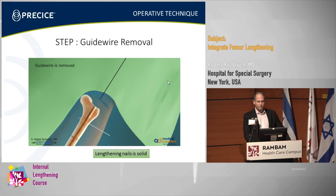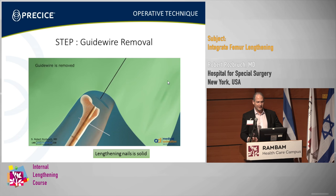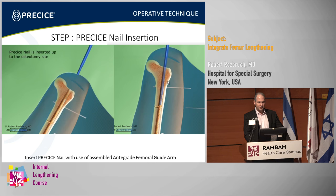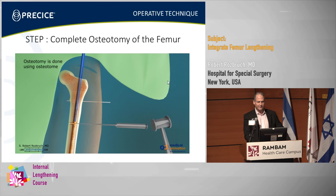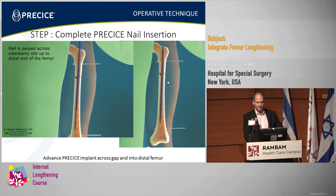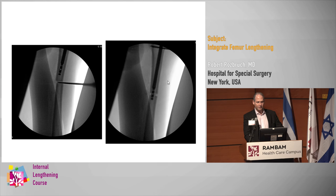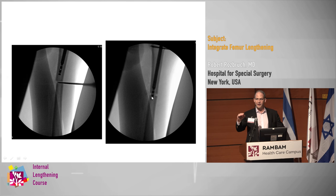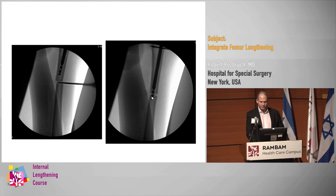Then the guide wire is removed — it's a solid nail, so you can't put the nail in over the guide wire. You put the nail up to the osteotomy site, then complete the osteotomy, and pass the nail. The key thing is getting the thin part of the nail across the osteotomy. Once you do that, you've got it — it's not going to escape on you.